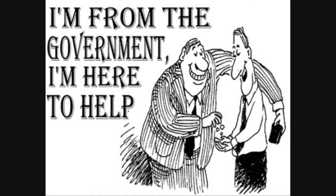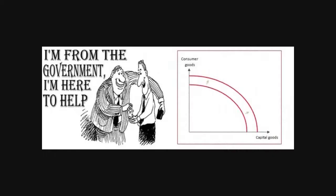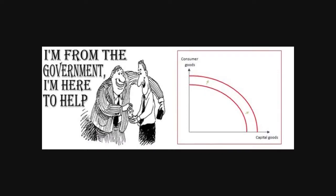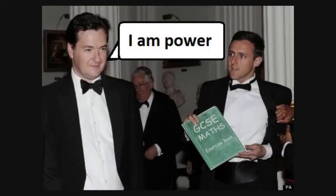This calls for government intervention to achieve a more equitable distribution of income and wealth, to improve the performance of the economy and to correct for market failure. There are a few ways the government can do this.